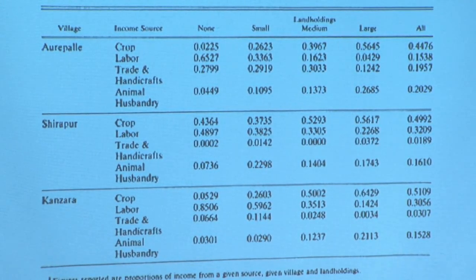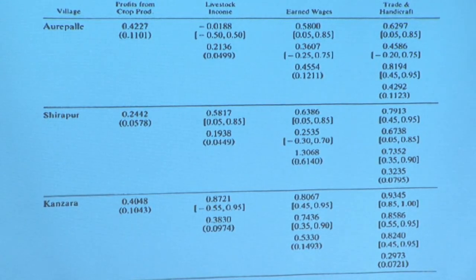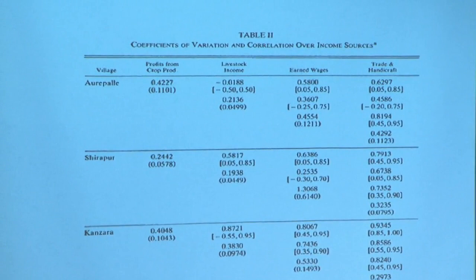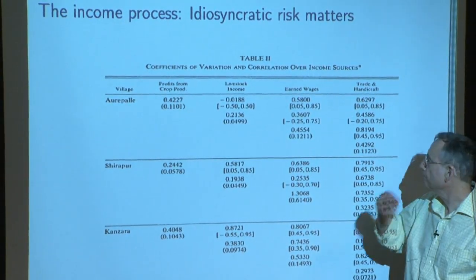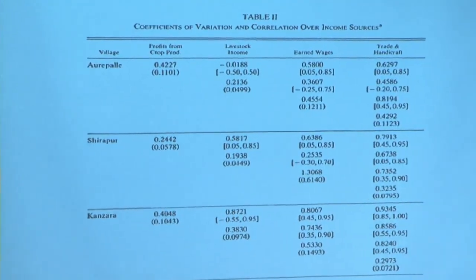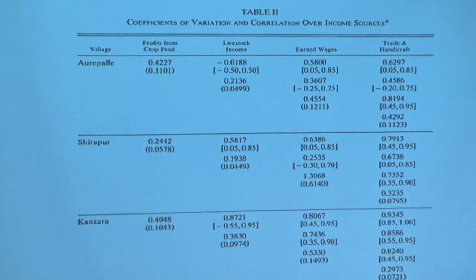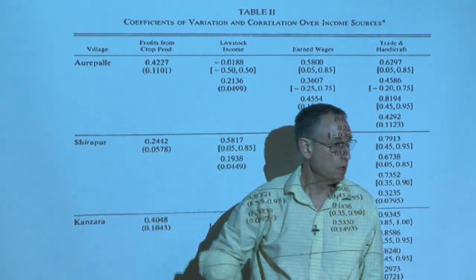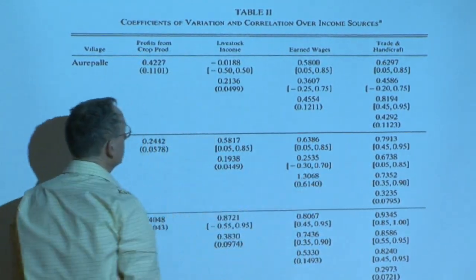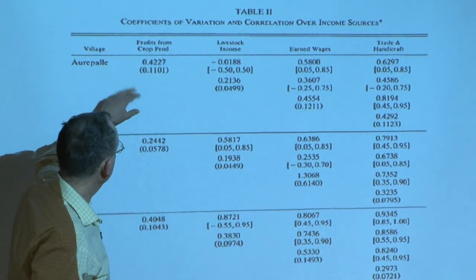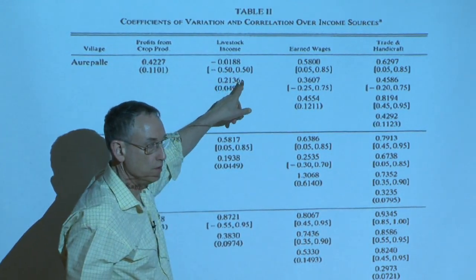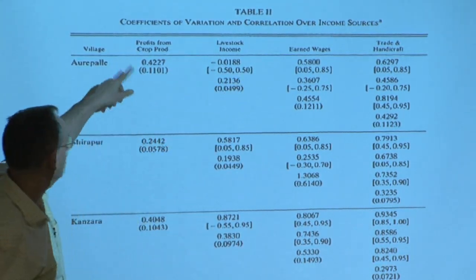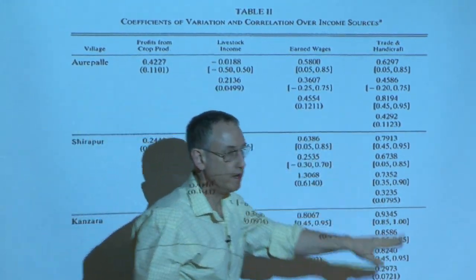There are three villages involved. That pattern is pretty common. Reading the matrix: going down the diagonal you're reading the coefficient of variation, and above and below the diagonal you're reading the correlation — say, livestock income with profit income. You don't fill in the bottom of the matrix to avoid double counting.